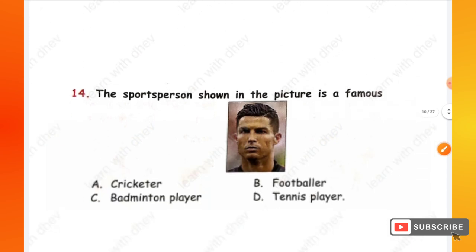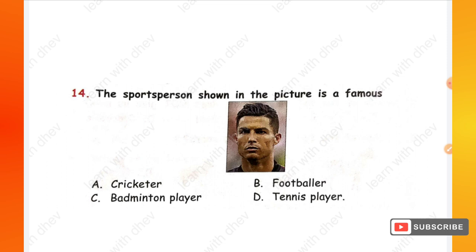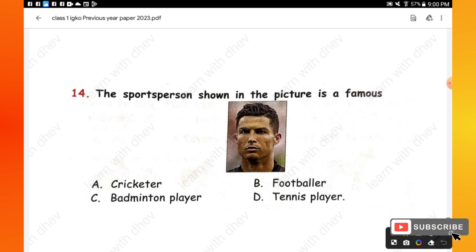Question 14: The sports person shown in the picture is a famous — options are: cricketer, footballer, badminton player, tennis player. The person shown in the picture is Ronaldo, who is famous for football. Hence option B — footballer — is the right one.